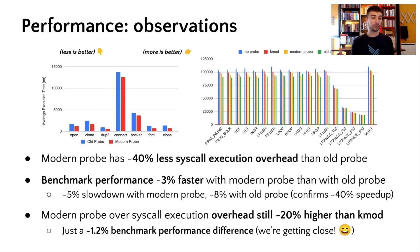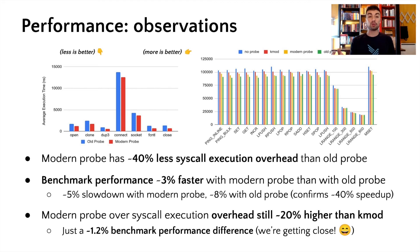We also decided to run the user space benchmark with our kernel module instrumentation to see how the two eBPF probes compare. The kernel module introduced an overhead on the benchmark about 20% lower compared to the new probe and about 45% lower compared to the old one. Sadly, this shows that eBPF is still no match for the kernel module performance-wise, but that accounts to only 1.2% performance difference on the benchmark, so the difference between the two is getting far less visible for real use cases. Plus, we think that improvements from the older eBPF probe are still very interesting.